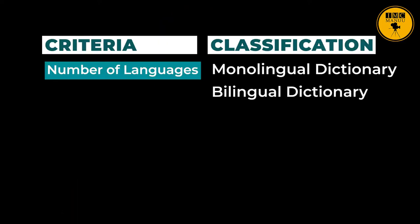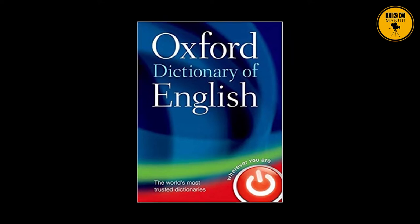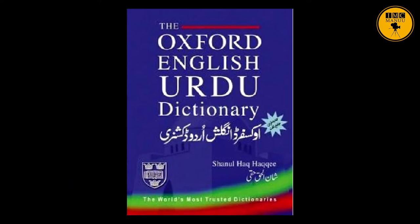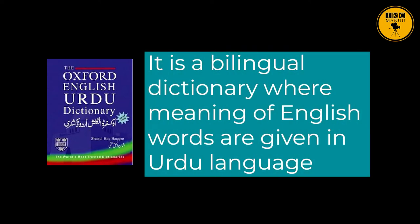According to number of languages used in a dictionary, there are three types: monolingual dictionary, bilingual dictionary, and trilingual dictionary. In a monolingual dictionary, only one language is used. In the Oxford Dictionary of English, meaning and usage of words are given only in English. A bilingual dictionary gives meaning of English words in another language, such as the Oxford English Urdu Dictionary, where meaning of English words are given in Urdu.